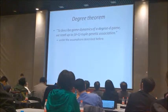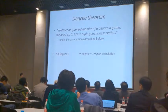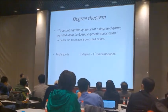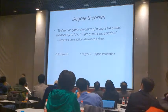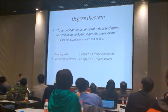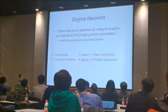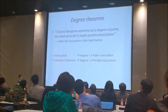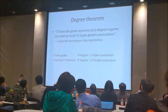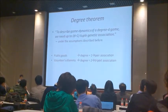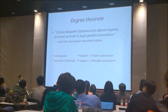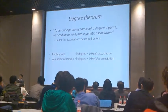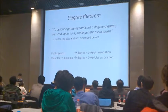If we try to understand the public goods game, that's a linear game of degree 1. So that means we need the two-way genetic association — that is, relatedness. But for the volunteer's dilemma, the three-person volunteer's dilemma, that was degree 2, so we need three-way associations. This study can elucidate which games can be described by relatedness alone, and which cannot.